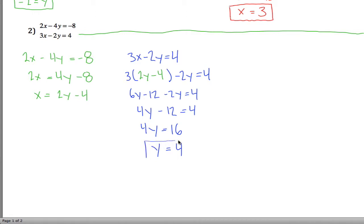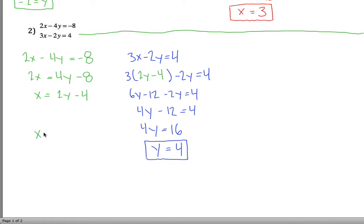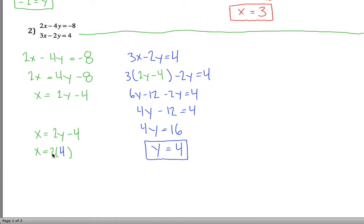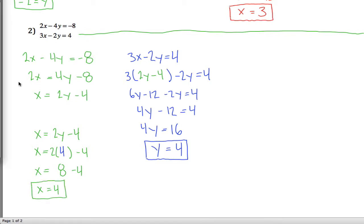Now I have the answer for the y coordinate. To figure out the x coordinate, I use the equation I already have solved for x: x equals 2y minus 4. I just figured out that y equals 4, so instead of writing y I'll write 4. So x equals 2 times 4 minus 4, which is 8 minus 4, so x equals 4 also. A little bit weird that x is 4 and y is 4, but that's perfectly fine — that can happen sometimes.